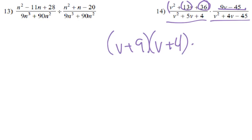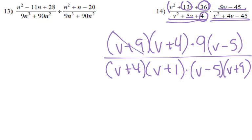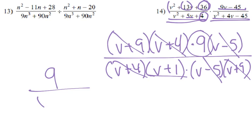this one factors of 4 that add up to 5 would have to be v plus 4 times v plus 1, times factors of negative 45 that add up to 4 would be v minus 5 times v plus 9. So we've got a v plus 9, we cancel, a v plus 4, we cancel, a v minus 5, we cancel, we're left with 9 on the top, and v plus 1 on the bottom, which we can't simplify any further.